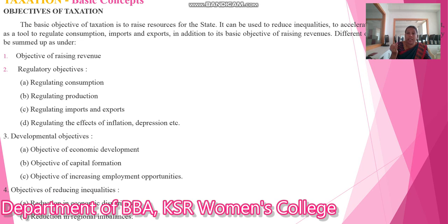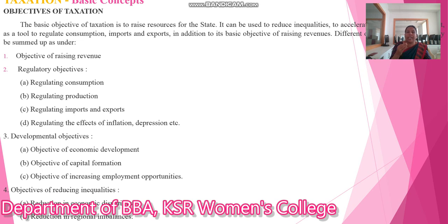The second is regulatory objectives — these include regulating consumption, regulating production, regulating imports and exports, and regulating the effects of inflation and depression. The third is developmental objectives — these include objectives of economic development, capital formation, and increasing employment opportunities.